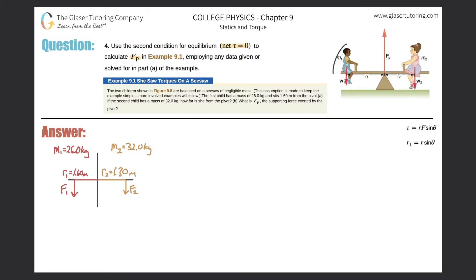Right here is example 9.1, and it correlates with this picture over here. We have two children, each with their own respective masses. The first child weighs 26 kilograms, that's what I have over here in red. And the second child weighs 32 kilograms, that's what I have over here in yellow.